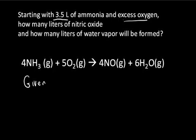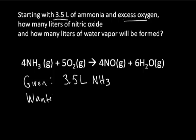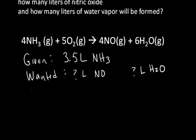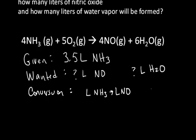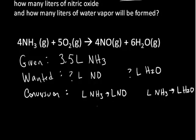Let's be systematic. What's given: 3.5 liters of ammonia and excess oxygen. What's wanted: how many liters of nitric oxide will be formed, and how many liters of water vapor will be formed. The conversion is straightforward — from liters of ammonia to liters of nitric oxide for one problem, and from liters of ammonia to liters of water vapor for the other. The conversion factors come from the reaction stoichiometry.